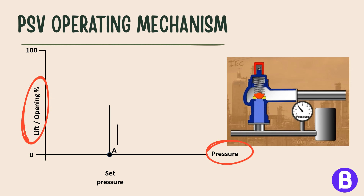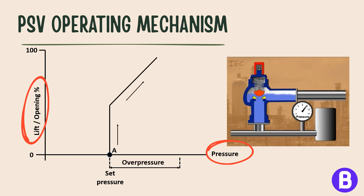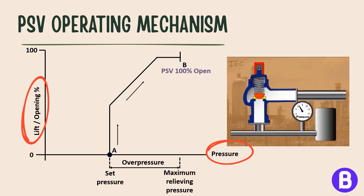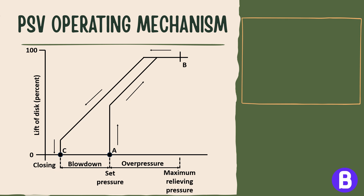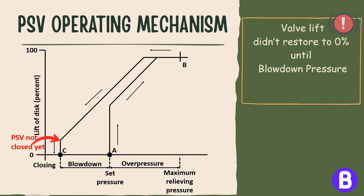As there is still not enough valve lift at the set pressure, the pressure continues to rise to the accumulation pressure and overpressure, and the valve will fully open to relieve the excess pressure. Finally, once the pressure is relieved, the valve moves to the blowdown phase where it reseats, preventing further release of fluid. Note that the valve lift did not restore to 0% until the blowdown pressure is reached, not at the set pressure.